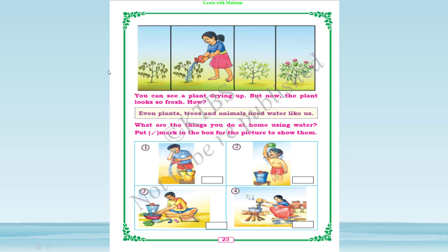In the first diagram the plant is dried, and when a girl puts water on it, you can see it started to grow beautifully. So here you can see that even plants, trees, and animals need water just like us.